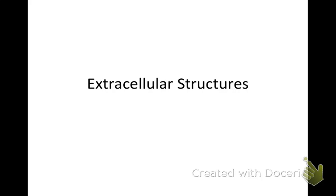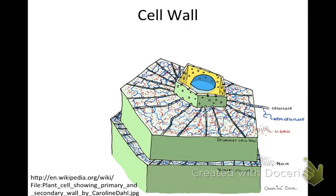All of the structures in this final section of the lesson are either outside of the cell in what is called the extracellular space, or spanning two cells, linking them together in some way. The most obvious extracellular structure is in plant cells — it was visible to the earliest microscopes — and that is the cell wall. The cell wall is secreted by plants; it is mostly cellulose and some proteins.